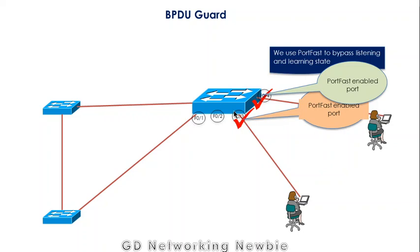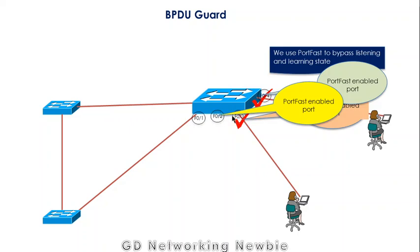We have to avoid STP-speaking nodes whenever we use the PortFast feature. But suppose we have enabled PortFast on this port and accidentally connected a switch to that port — it means we just broke our promise that we will not use any STP-speaking node on a PortFast-enabled port.